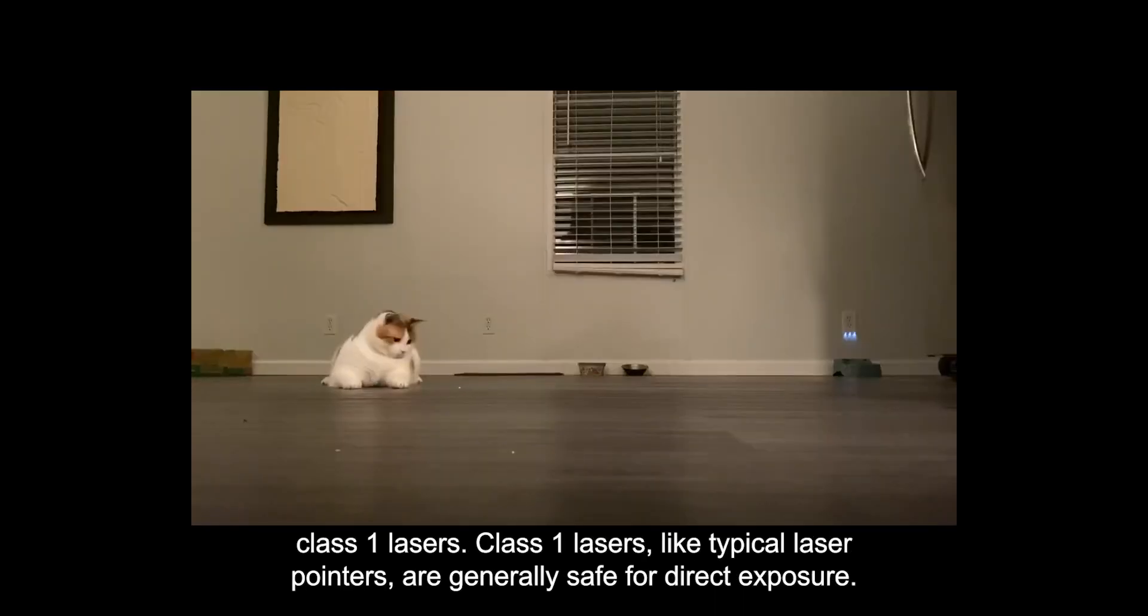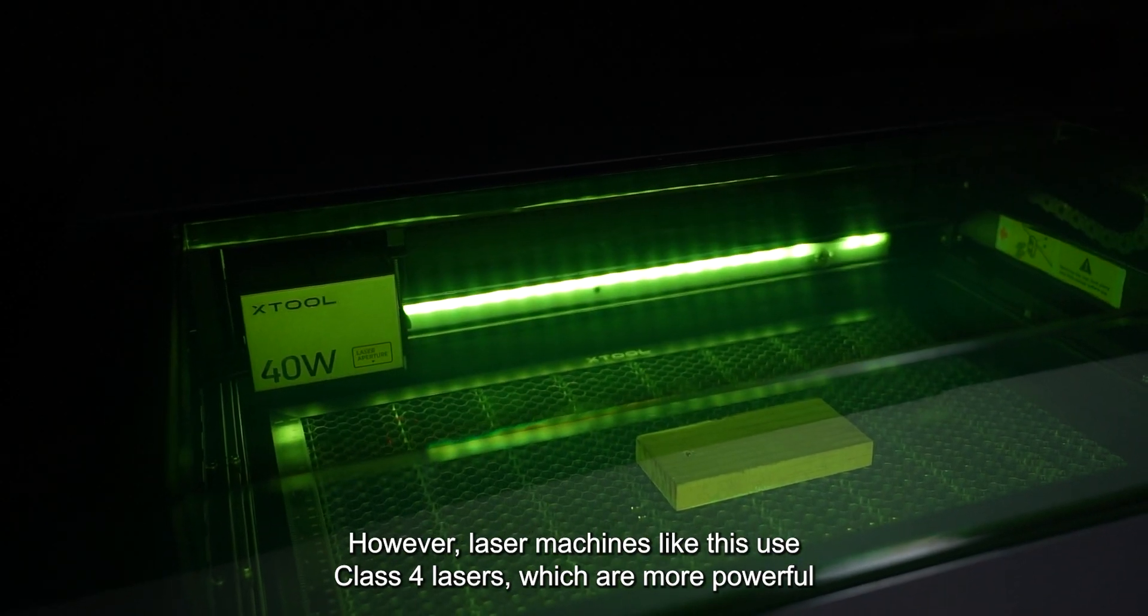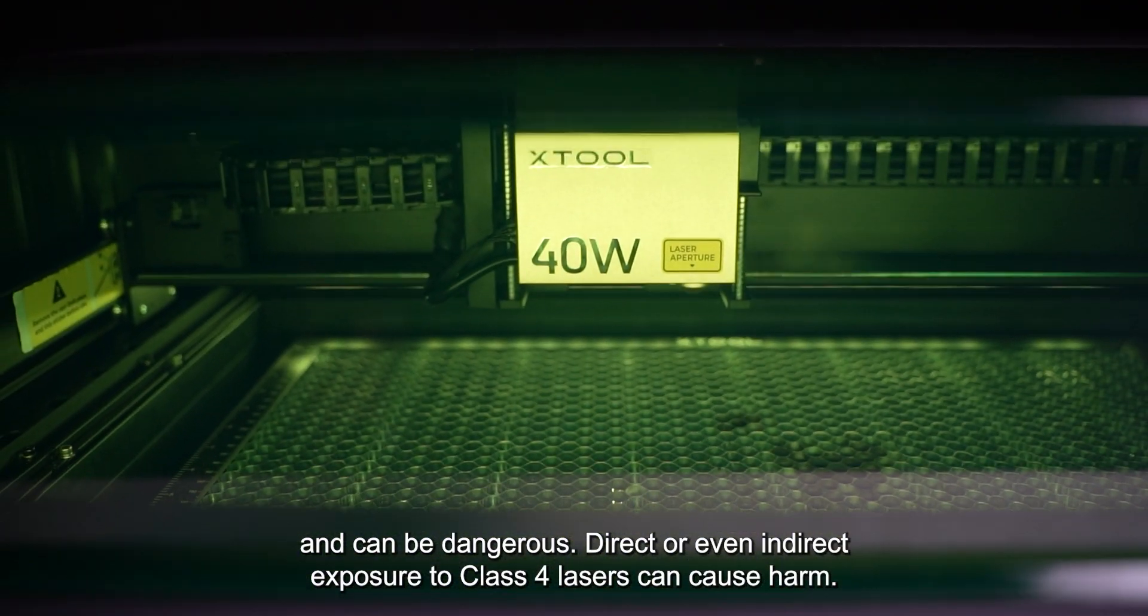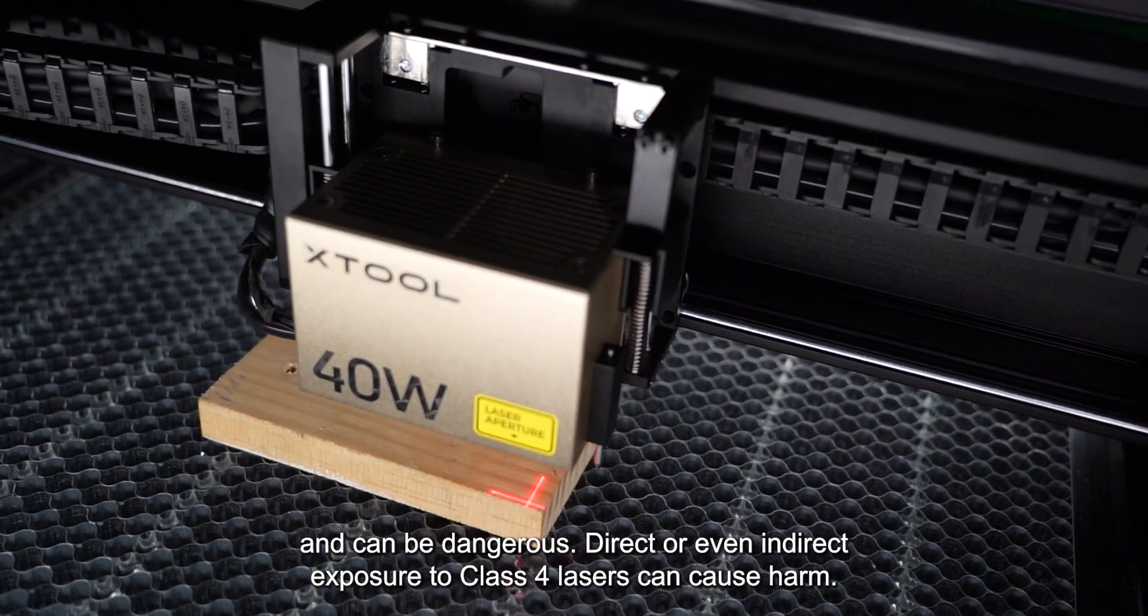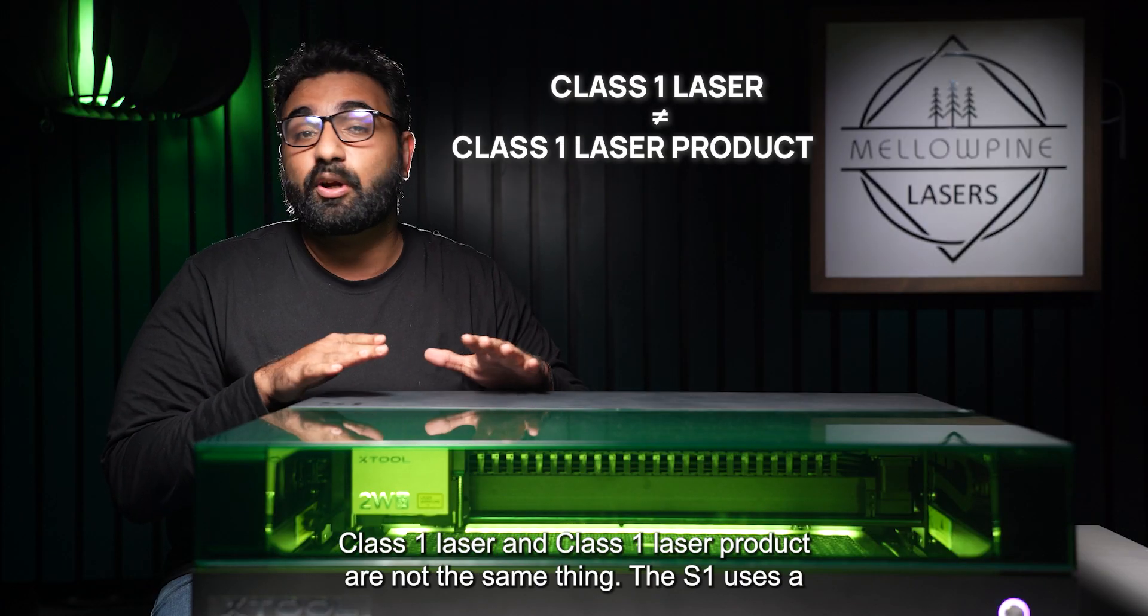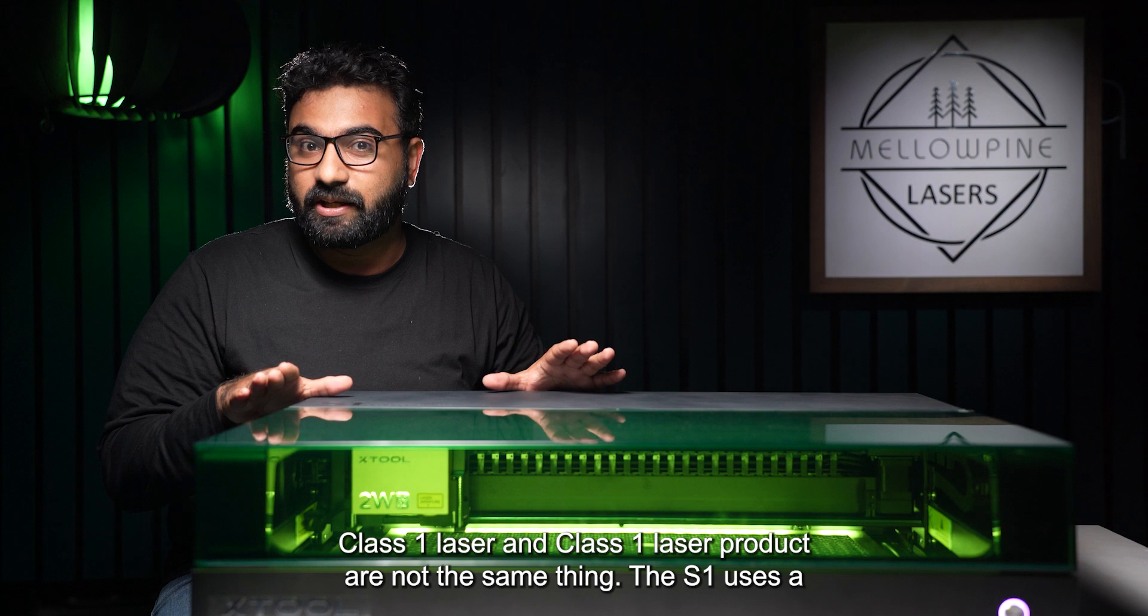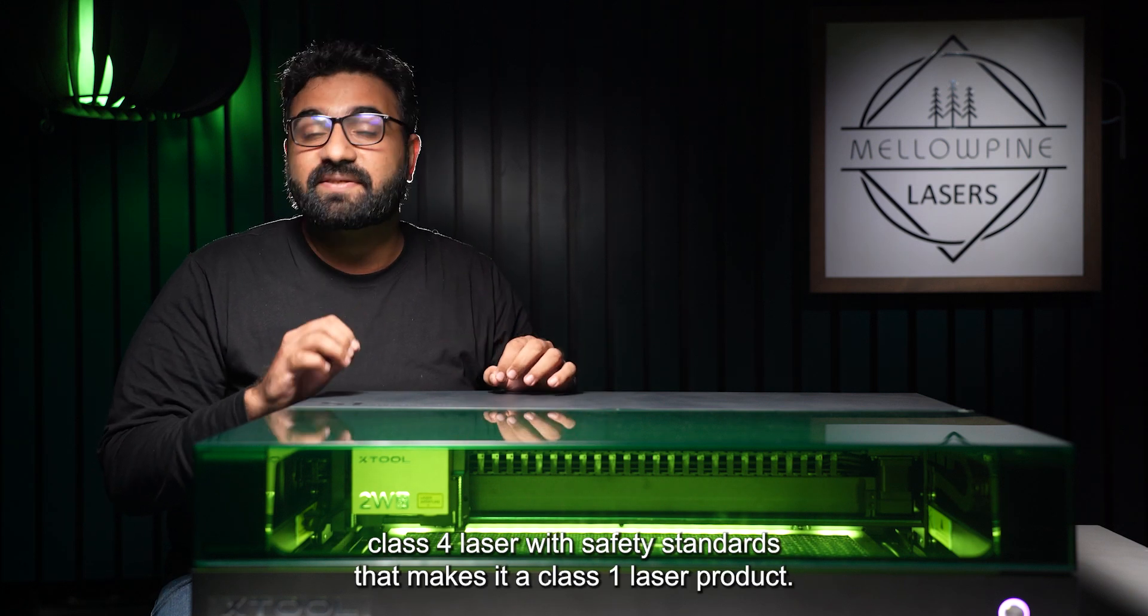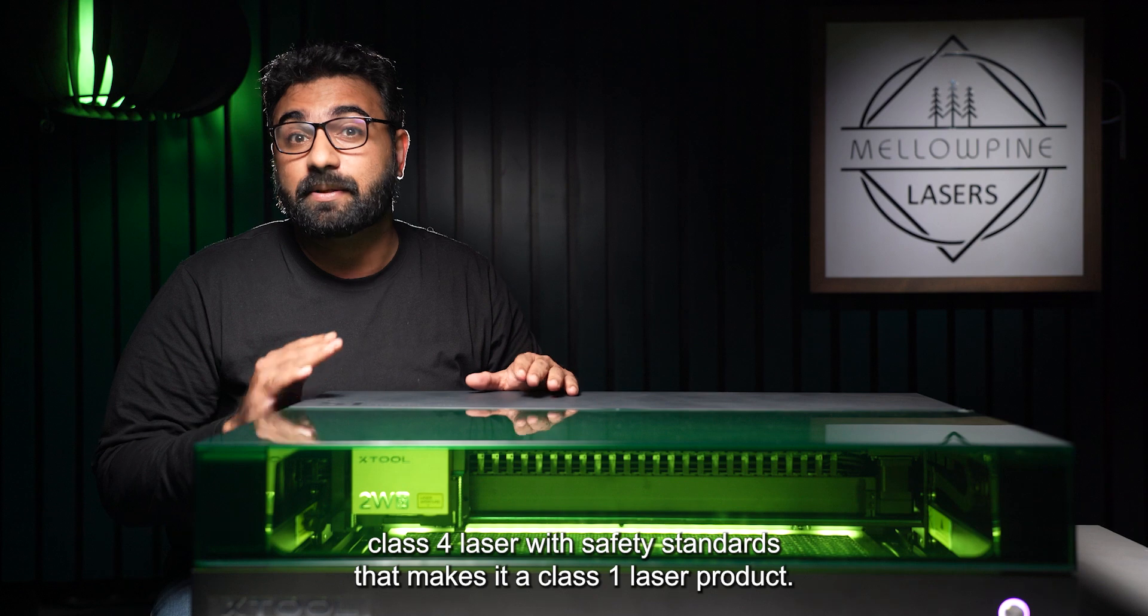Class 1 lasers, like typical laser pointers, are generally safe for direct exposure. However, laser machines like this use class 4 lasers, which are more powerful and can be dangerous. Direct or even indirect exposure to class 4 lasers can cause harm. Class 1 laser and class 1 laser product are not the same thing. The S1 uses a class 4 laser with safety standards that makes it a class 1 laser product.